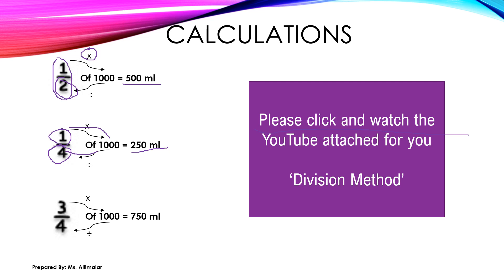The last one: three over four of one liter equals 750 milliliters. Same method. Three times 1000 — if unsure, cover the three zeros and do three times one, which is three, then add three zeros back — giving you 3000. Then divide 3000 by four and you get 750 milliliters.